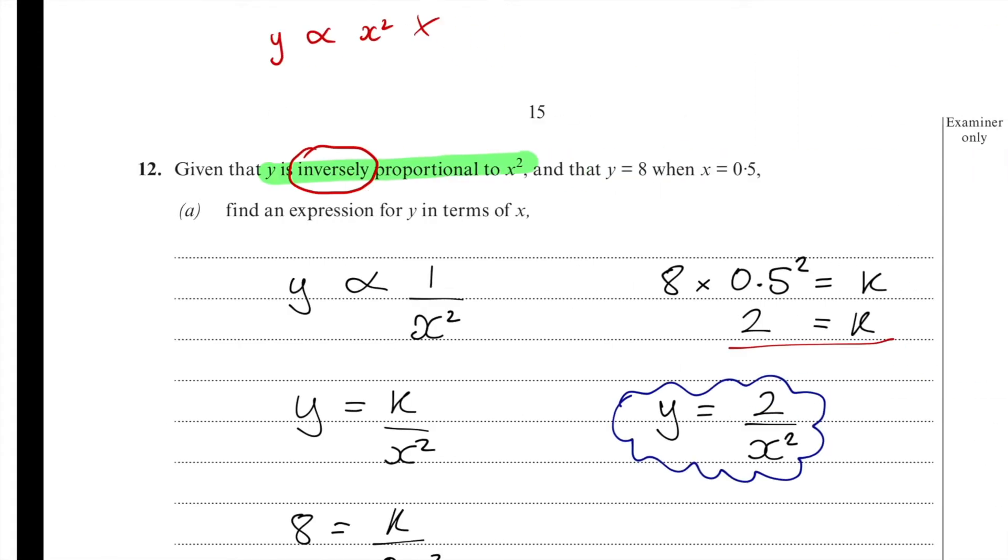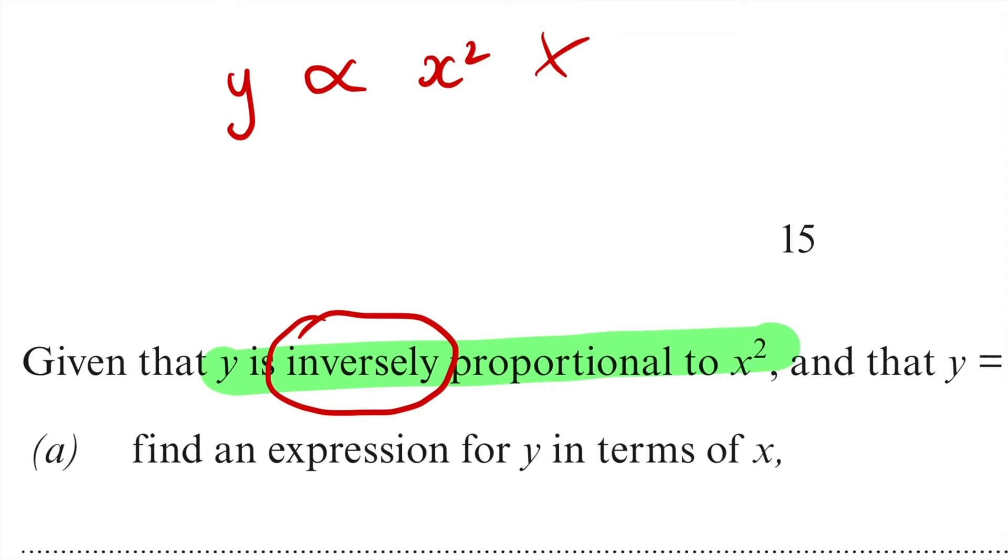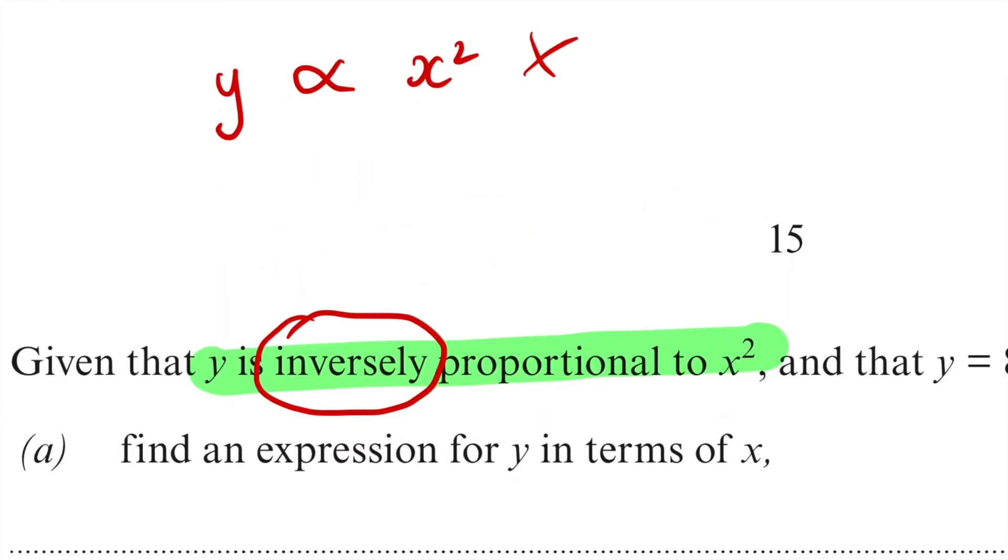First of all, we've got this statement here that y is inversely proportional to x squared. Now where people commonly go wrong is they miss that word saying inversely. Inversely means correctly what I've said here, which is y is proportional to 1 over x squared. The inversely means that 1 over. If you wrote it as y proportional x squared like this here, then you're saying it's directly proportional.